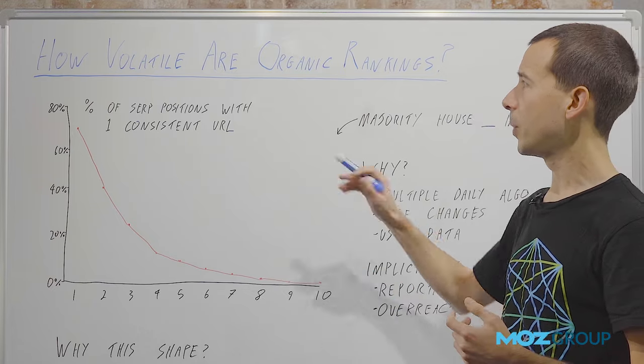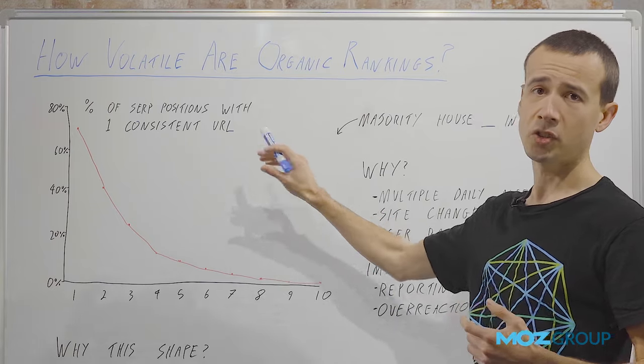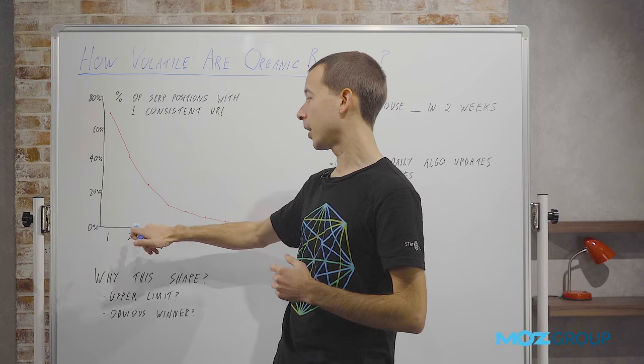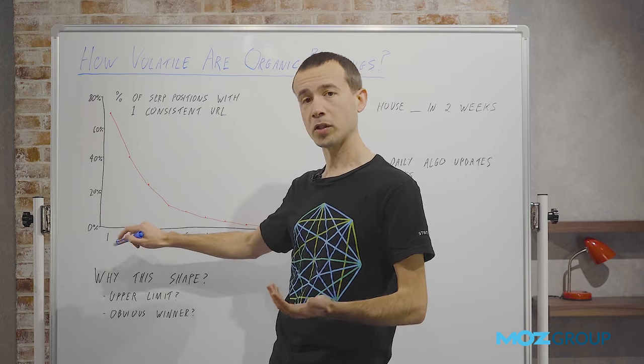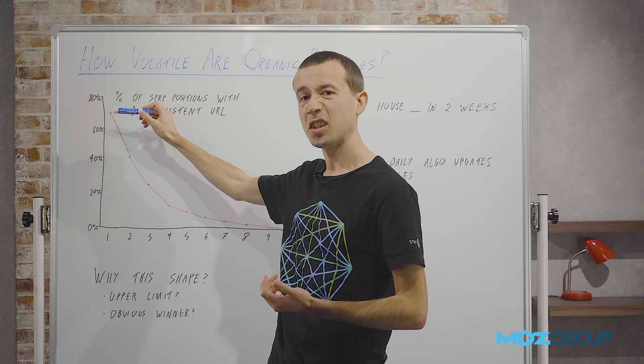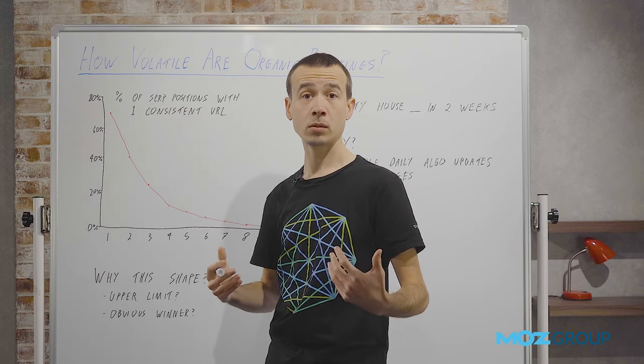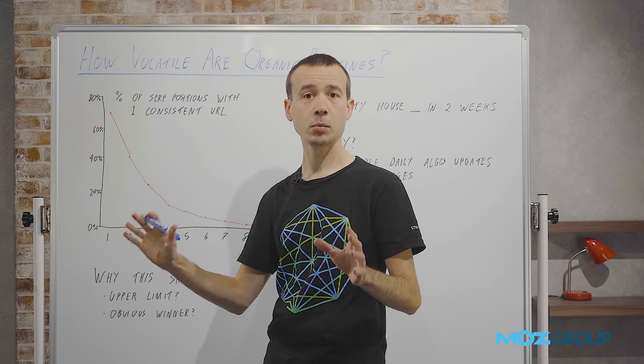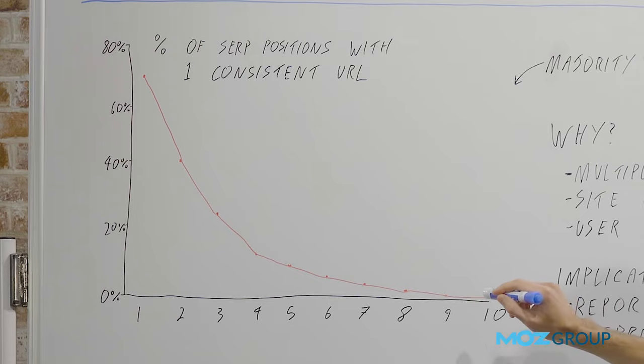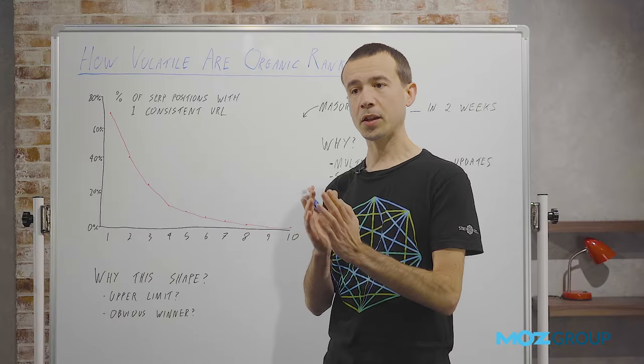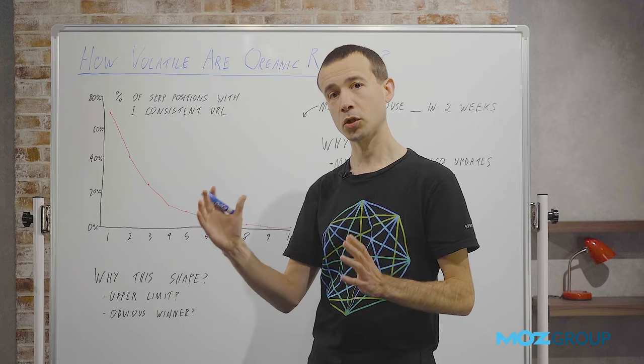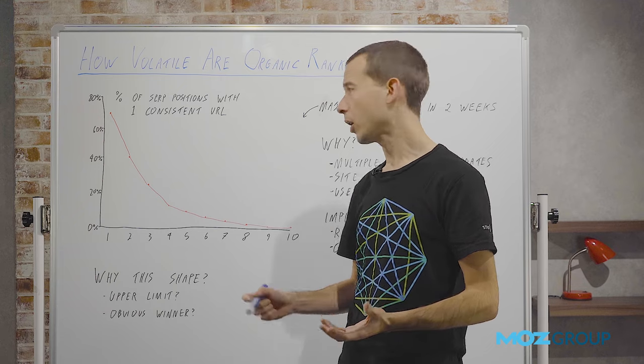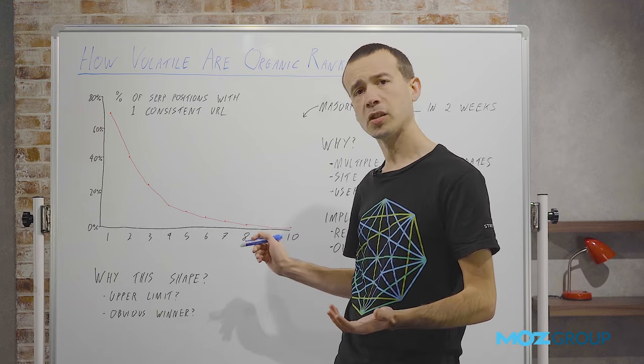This chart shows the percentage of SERP positions that had one consistent URL for that entire time. So for example, in position one, at the top of the SERP, about 69% of position one results had one URL every day for 14 days on the trot in this period. Going down to position 10, only about 1% of SERPs had the same URL in position 10 for the entire two-week period. Now that's already quite interesting to me because I wouldn't have predicted such a steep drop-off or such a smooth, neat curve for this.